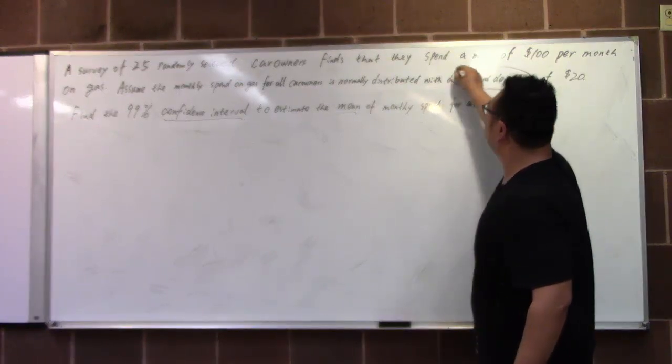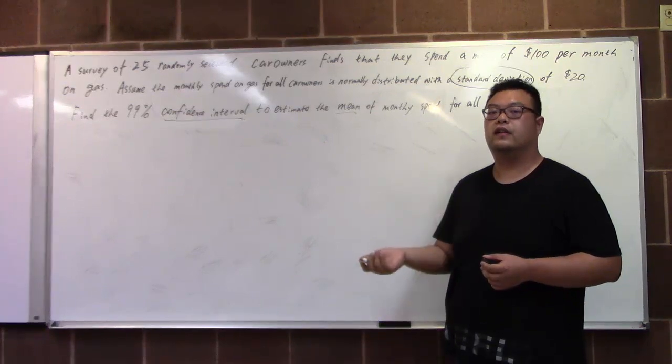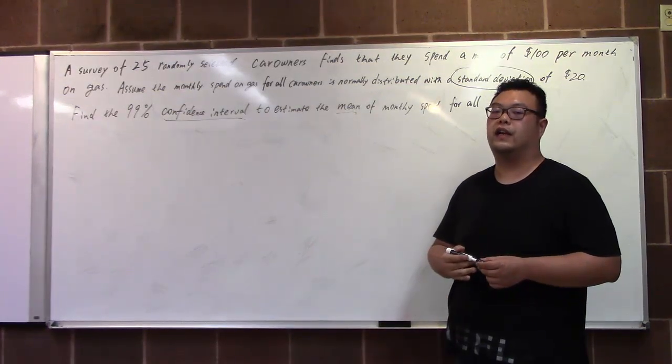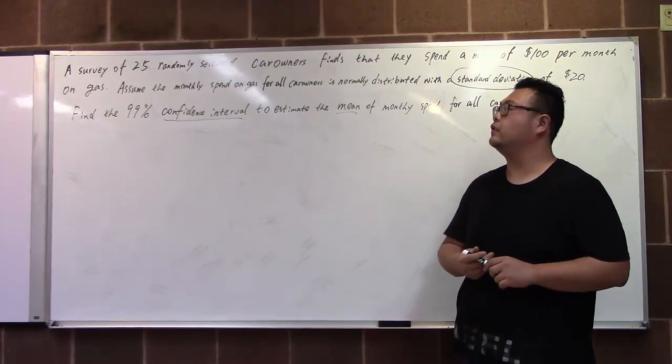The standard deviation given in the question, if that is from the population, then most likely it's the Z score. If from the sample, then most likely it will be from using the T score.